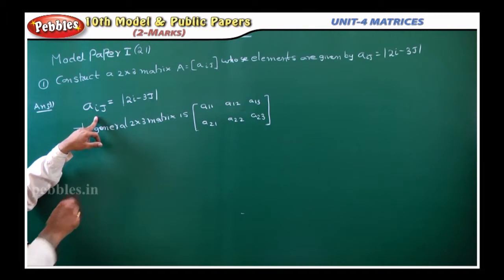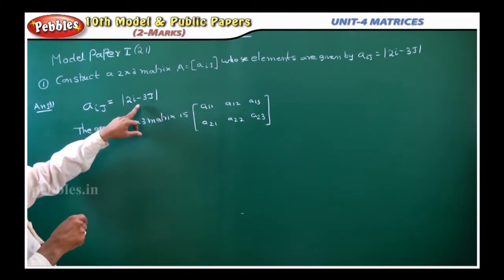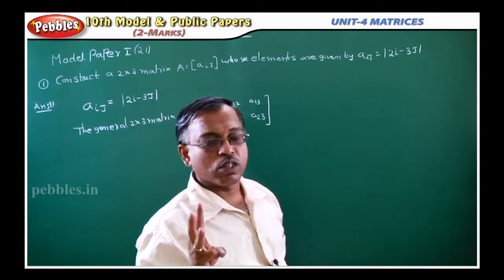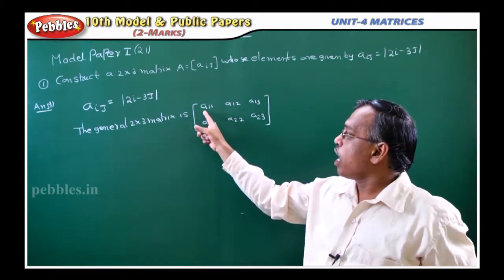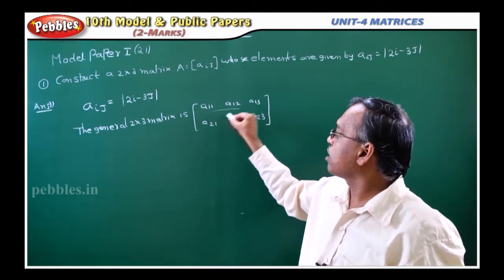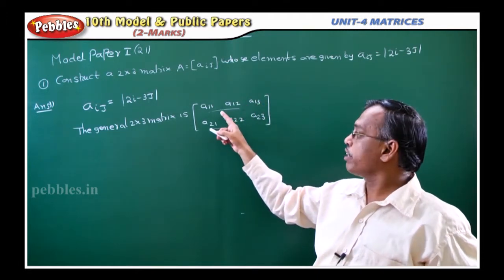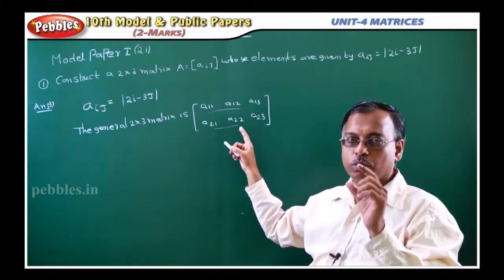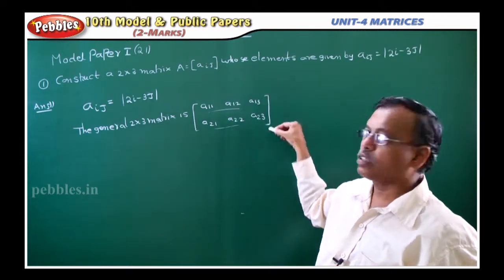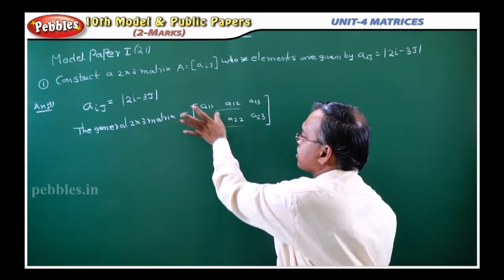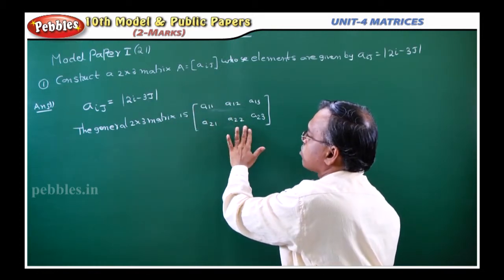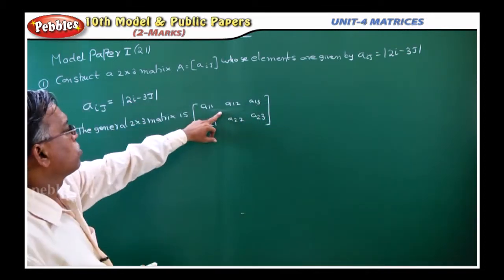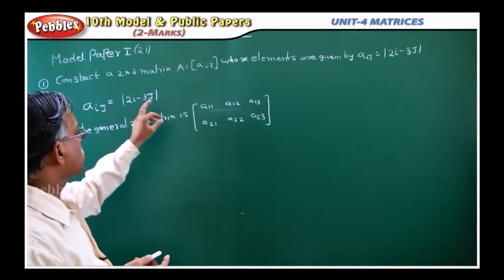A_ij is equal to modulus of 2i minus 3j. The general 2 by 3 matrix form consists of two rows and three columns. Taking two rows and three columns — rows are counted from left to right, so this is the first row and this is the second row. Columns are counted from top to bottom: first column, second column, third column. All the elements A₁₁, A₁₂, A₁₃, A₂₁, A₂₂, A₂₃ you have to find out using this definition.